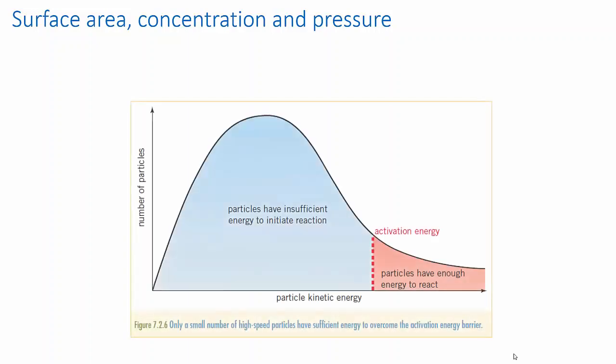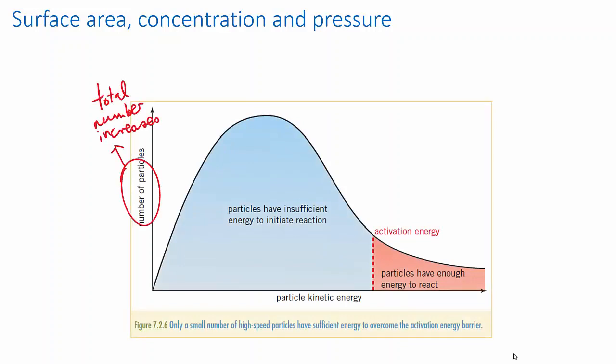Firstly let's look at surface area, concentration and pressure. We're going to bundle these together because they essentially work in the same way. Take our hypothetical flask of reactants and their Maxwell-Boltzmann distribution. Have a look at the y-axis of this graph. This is the number of particles.